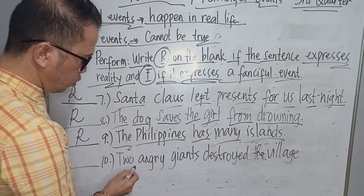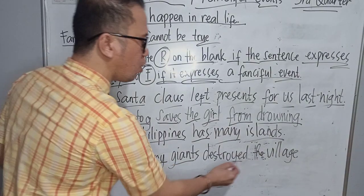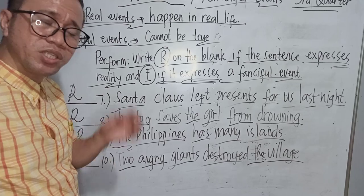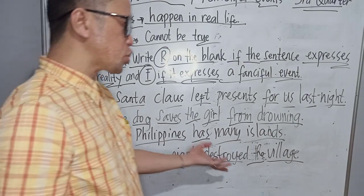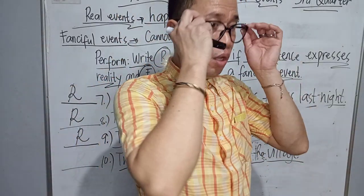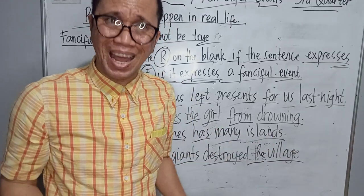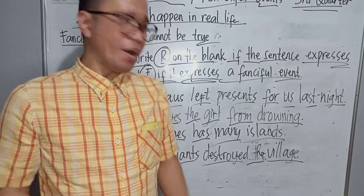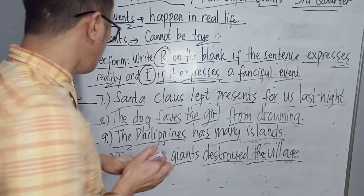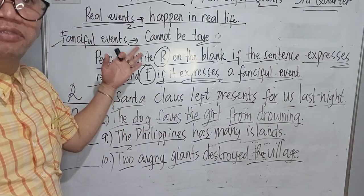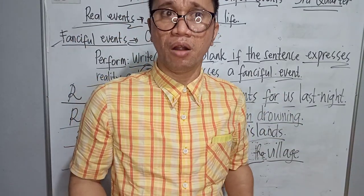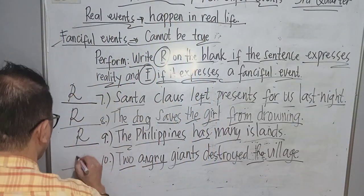Number ten: Two angry giants destroy the village. In a story or movie it can happen, but when we apply it to real life situations, this particular statement is not showing real events. It shows fanciful events — it is an imagination that two angry giants destroyed the village. So we are going to write F.